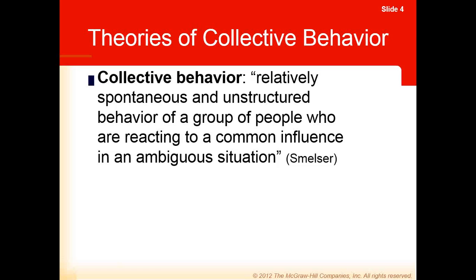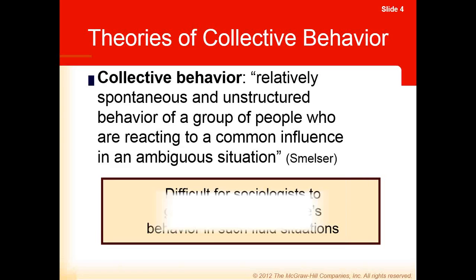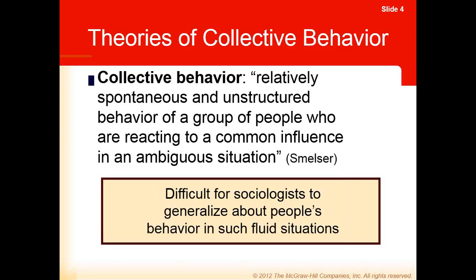Collective behavior, according to Neil Smelser, is relatively spontaneous and unstructured behavior of a group of people who are reacting to a common influence in an ambiguous situation. Collective behavior doesn't happen when everybody knows what to expect — it has to be an ambiguous situation where people aren't sure exactly what's supposed to be going on. There are a lot of theories on this because it's difficult for sociologists to generalize about people's behavior in such fluid situations.